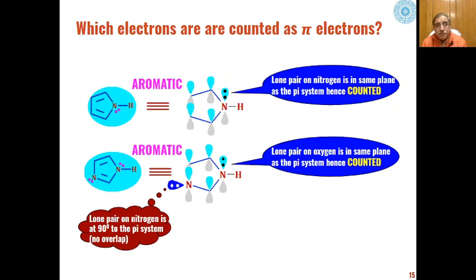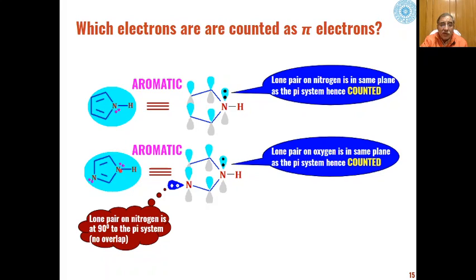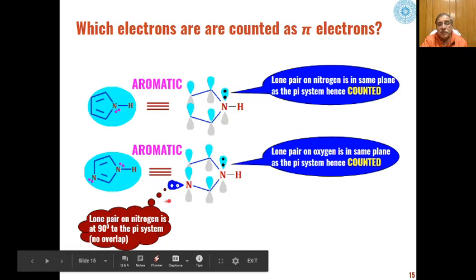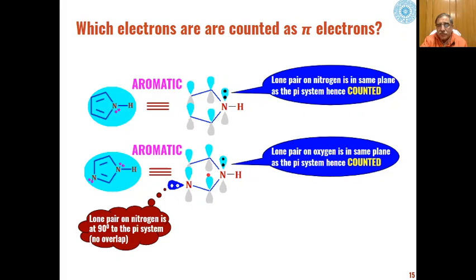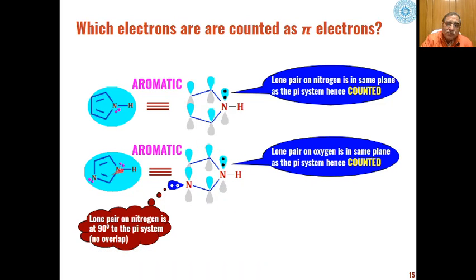In pyrrole, one lone pair on nitrogen is in the same plane as the pi system and is counted toward the overall overlap, making it an aromatic compound. In imidazole, one nitrogen has a lone pair at 90 degrees to the pi system — not counted — while the other nitrogen's lone pair is in the same plane as the pi system and is counted. With 2+2+2 = 6 pi electrons participating in the conjugation, imidazole is also an aromatic compound.